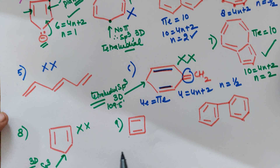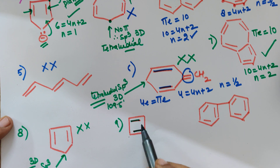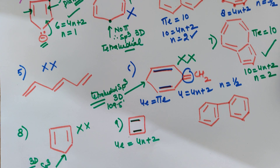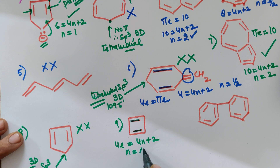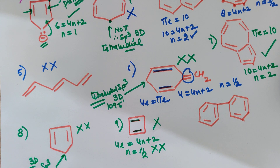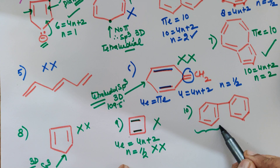Example 9: There are two pi bonds inside the ring, and all carbons have a pi bond, giving 4 electrons. Fitting into 4n + 2: n comes out to be 0.5, which is not a whole number. So this compound is not aromatic.